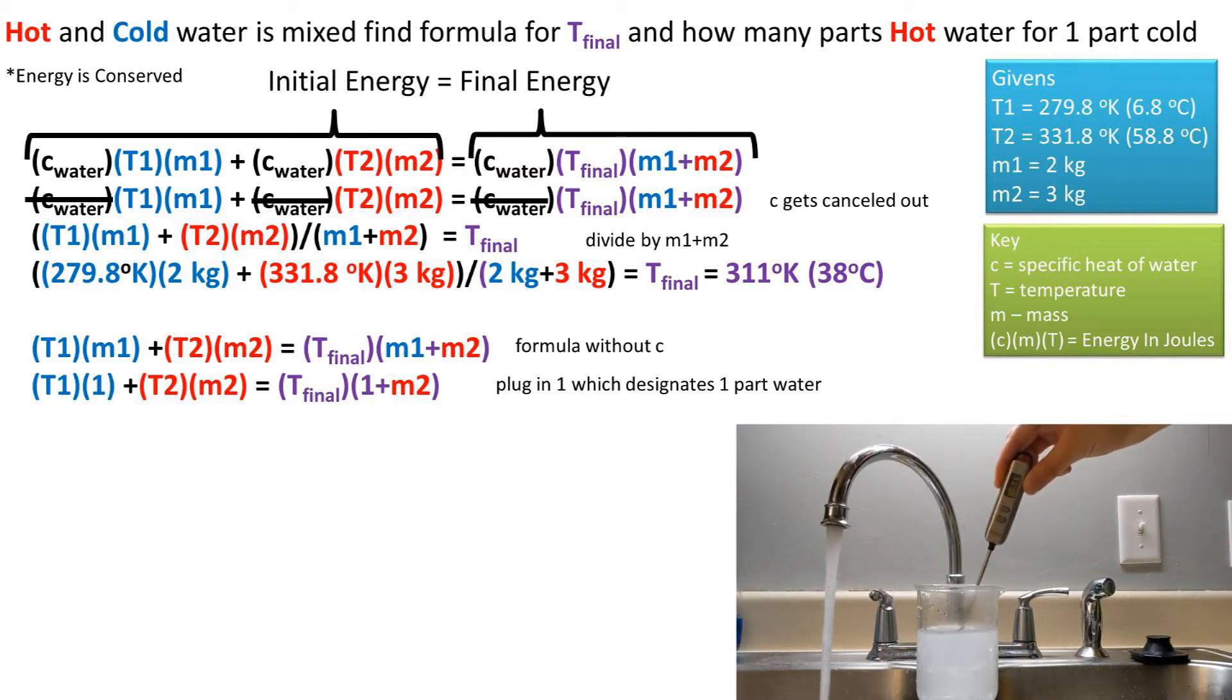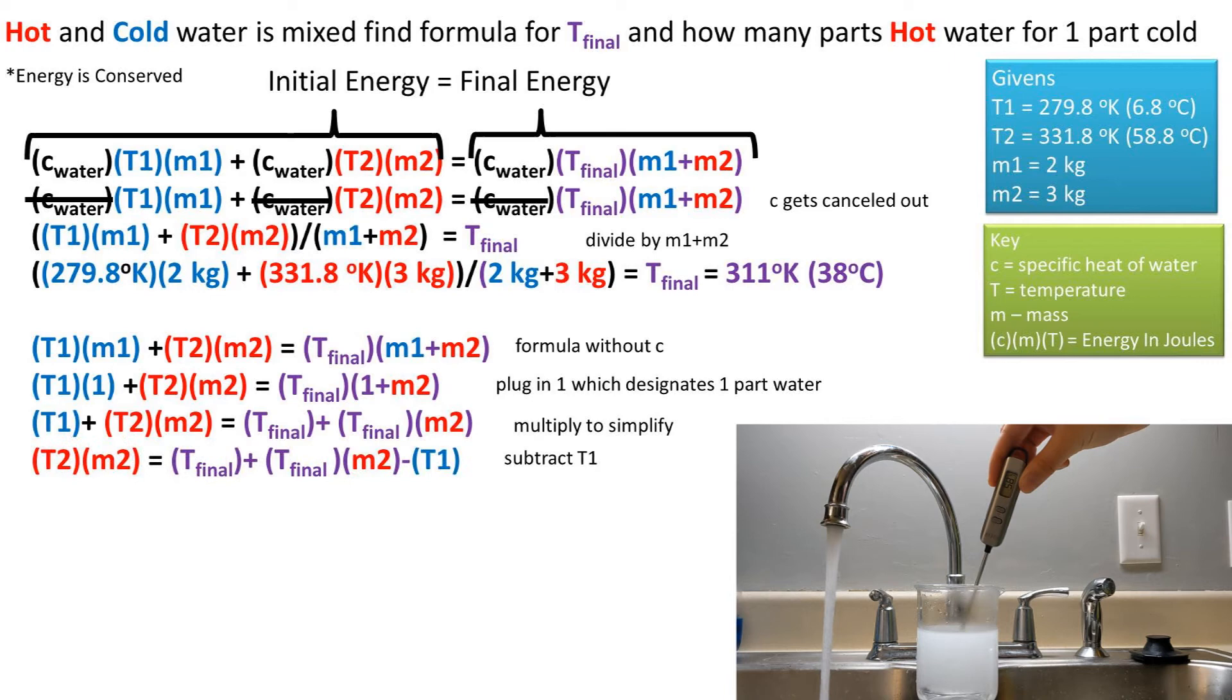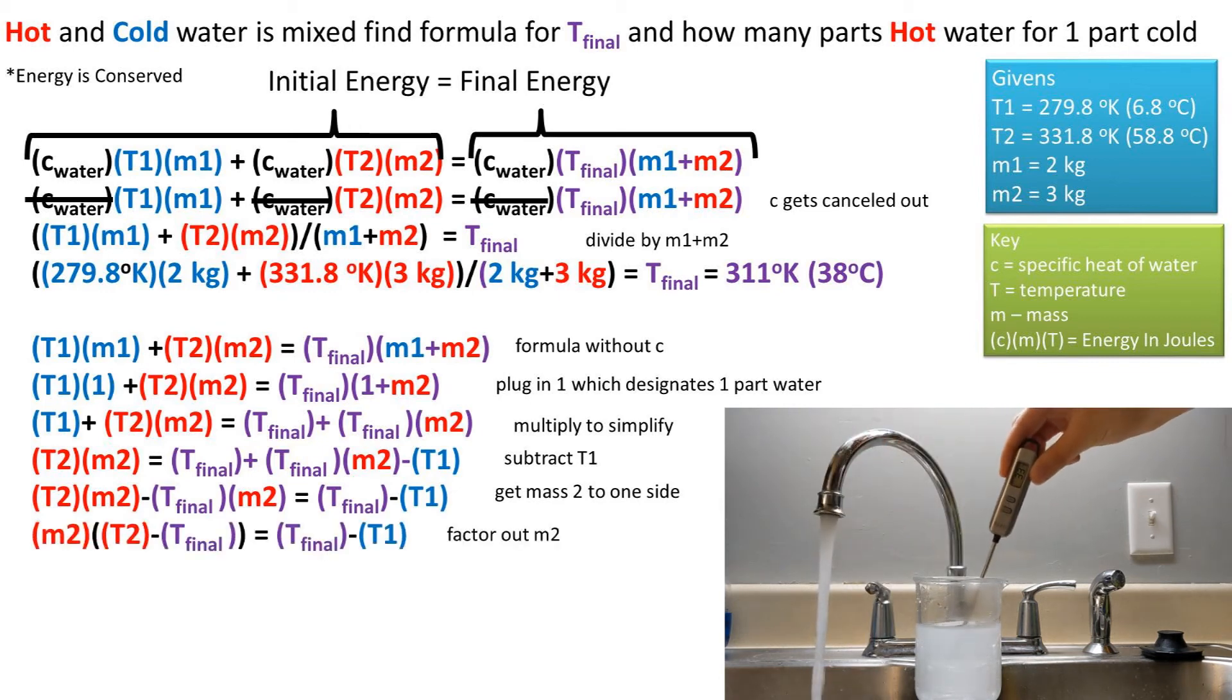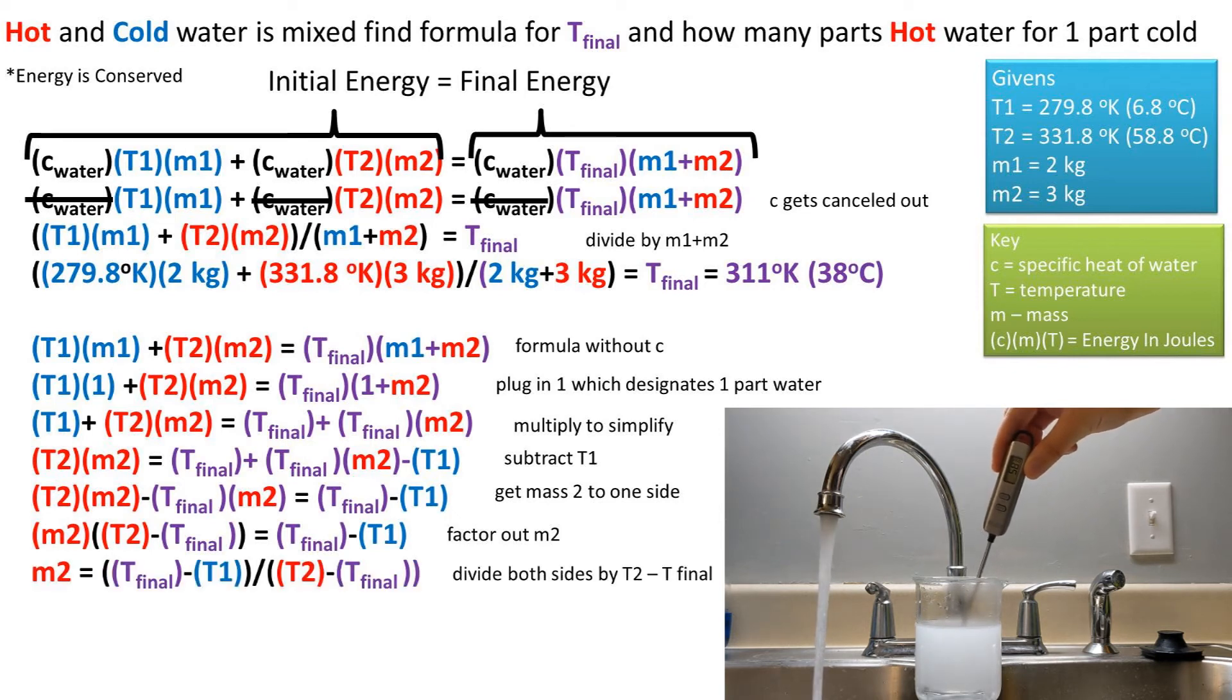We can multiply this equation to get it to a simpler form that we can reduce. Then we can subtract T1 from both sides of the equation. Next we can get all values tied to m2 to one side of the equation. Then we can factor out m2. Finally, we'll divide both sides by T2 minus Tfinal.